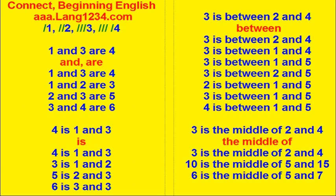One and three are four. One and three are four. One and two are three. Two and three are five. Three and four are six.